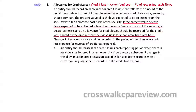So, credit losses on an impaired security are measured using the present value of expected future cash flows, and you compare the present value of expected cash flows with the amortized cost. The question is: how do you estimate expected future cash flows?